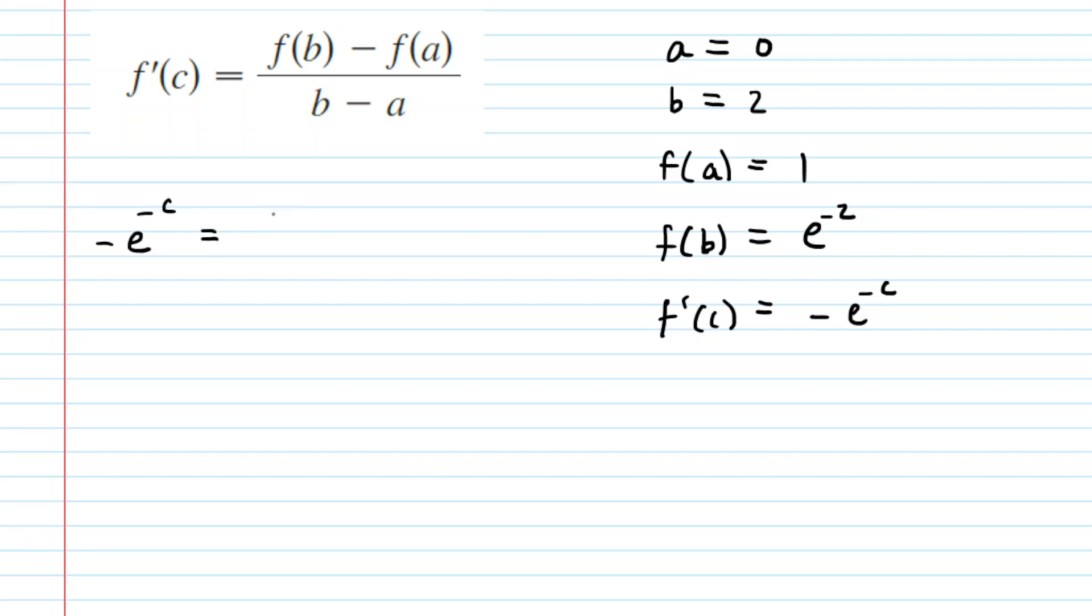So our f prime of c was negative e to the power of negative c. This is equal to our f of b, which was e to the power of negative 2 minus our f of a, and then divided by our b minus our a value. Now let's just simplify the denominator. We can say that 2 minus 0, of course, is 2.